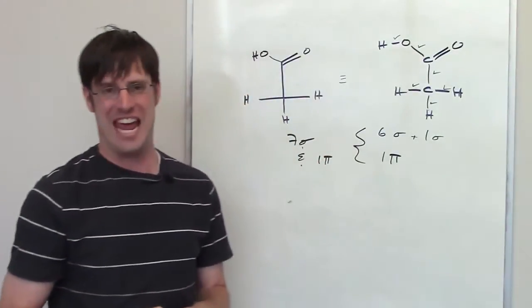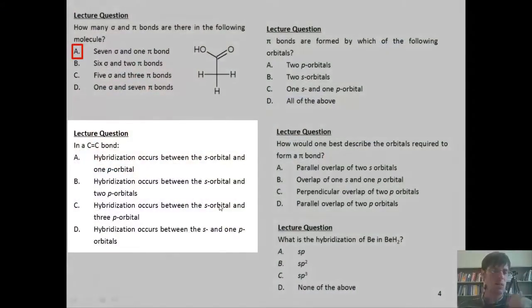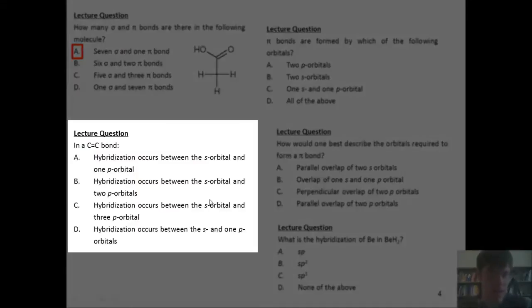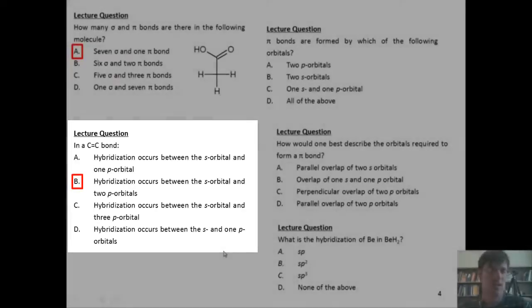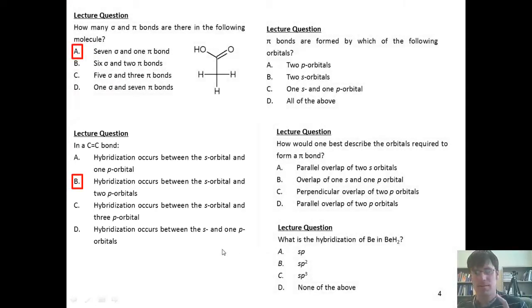Thank you. Have an enjoyable day. In this next question, we're asked to correctly describe the hybridization of a carbon-carbon double bond. The correct answer is B. If you want to know why, stay tuned right now.